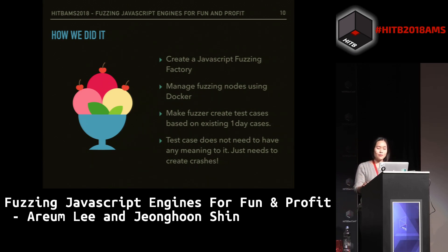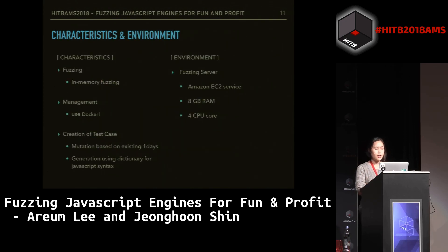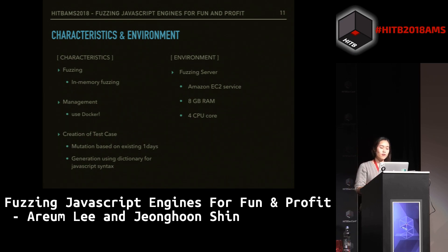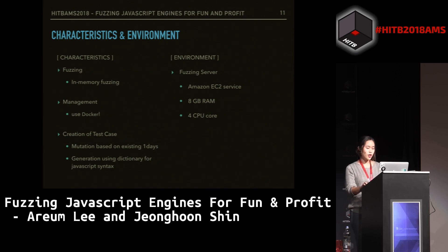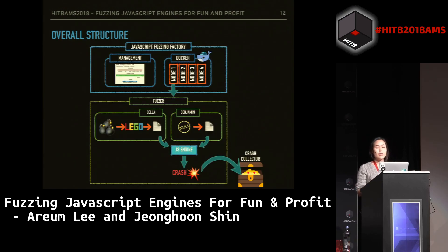Most importantly, because we didn't have much knowledge about lexical analysis or compilers, we decided that the test cases don't need to make sense — the code doesn't need to have any meaning to it. It just needs to create crashes. That's why we targeted existing one-day cases. Here are the characteristics and environment: we used in-memory fuzzing, and for management we used Docker. For creation of test cases, we used both mutation and generation — mutation based on existing one-days. Our fuzzing server used the Amazon EC2 service, 8 gigabytes of RAM, and 4 CPU cores.